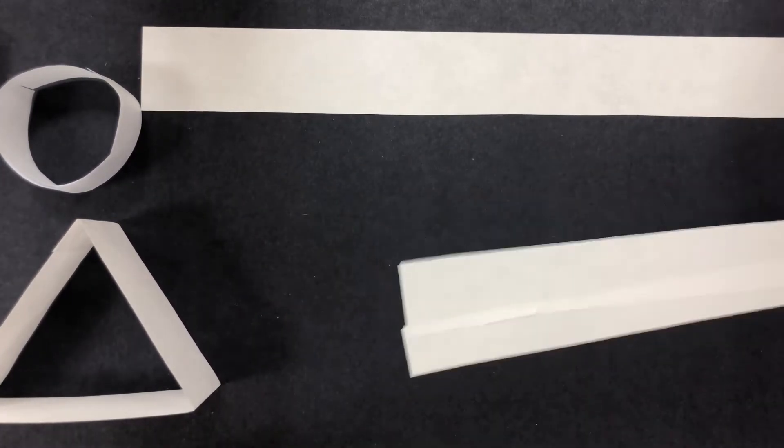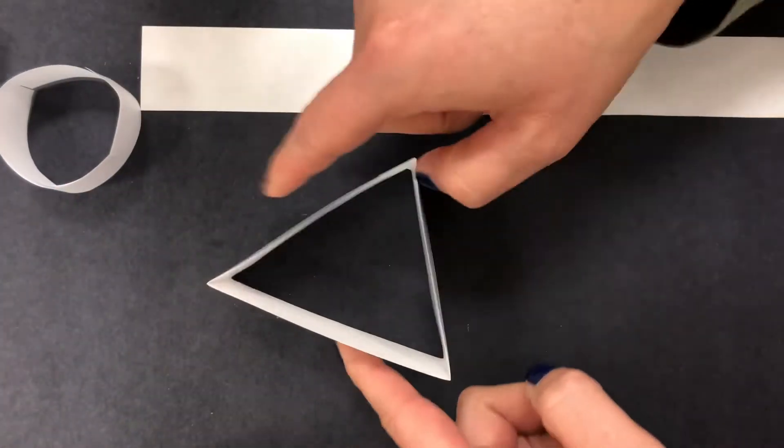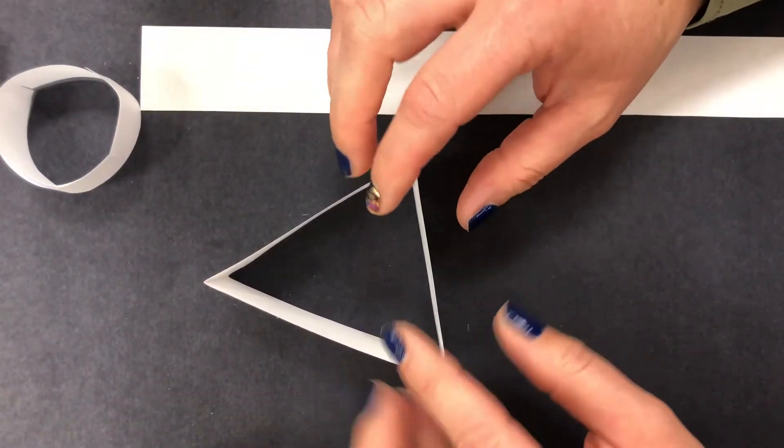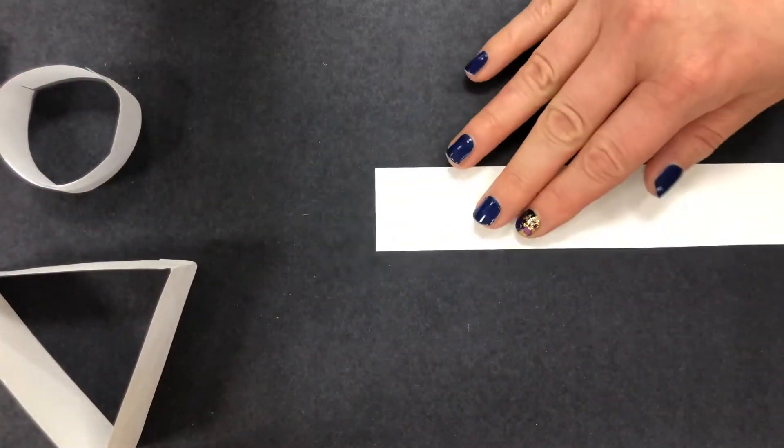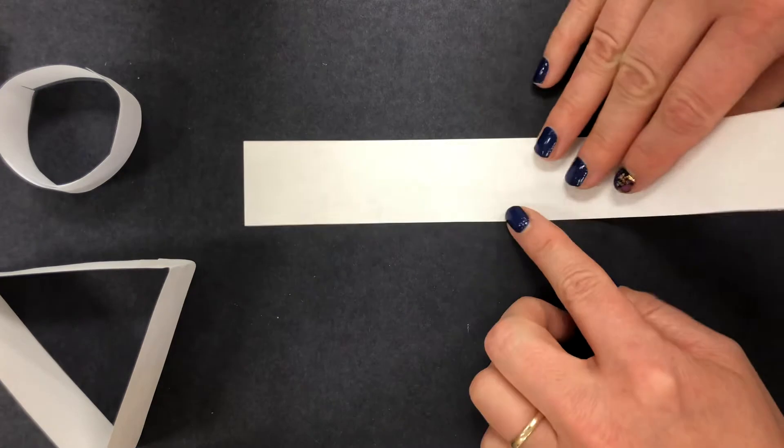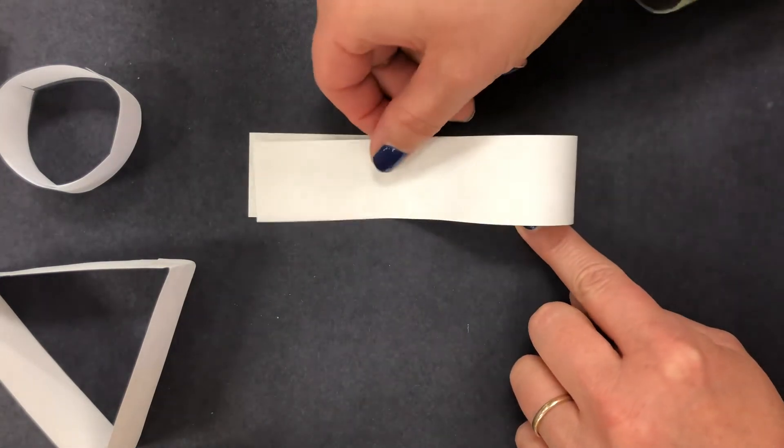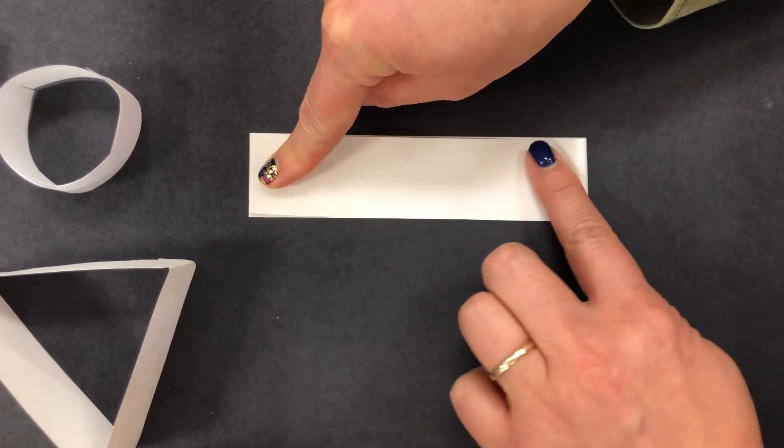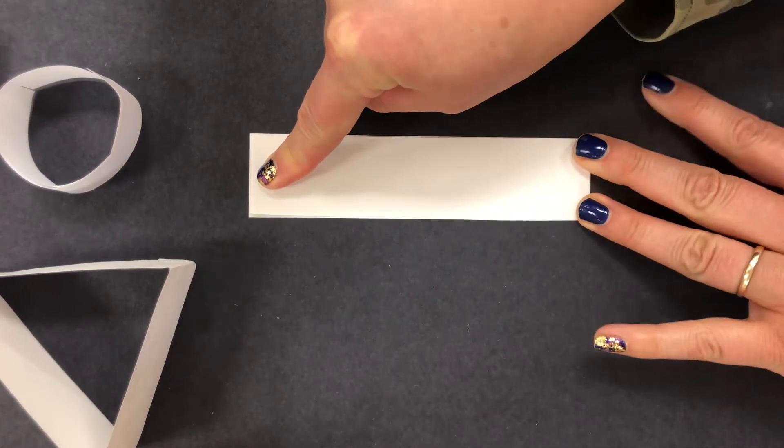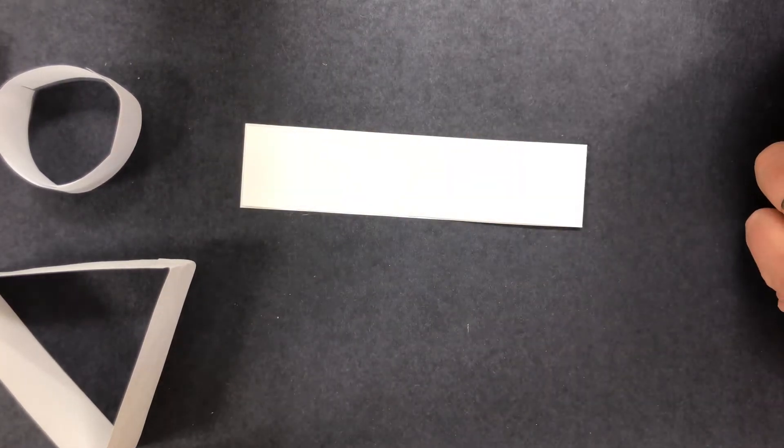Now you already know triangles have three sides, right? One, two, three. But we need a fourth side so that we have room to overlap. So I'm going to take my strip of paper and you take yours too, and we're going to start by folding it in half one time. Now we're going to fold it in half a second time.